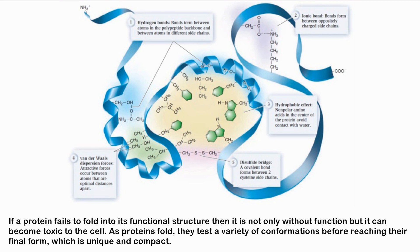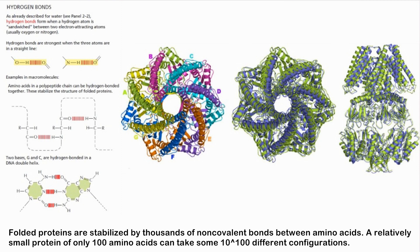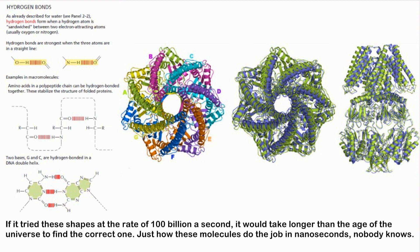If a protein fails to fold into its functional structure, it is not only without function but can become toxic to the cell. As proteins fold, they test a variety of conformations before reaching the final, unique, and compact form. Folded proteins are stabilized by thousands of non-covalent bonds. A relatively small protein of 100 amino acids can take some 100 trillion trillion trillion different configurations — if it tried these shapes at 100 billion per second, it would take longer than the age of the universe to find the correct one. Just how these molecules do it in nanoseconds, nobody knows.